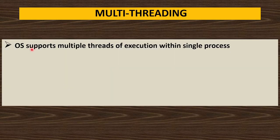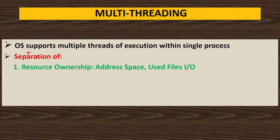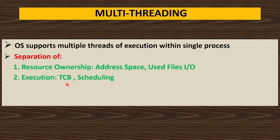In multi-threading, the OS supports multiple threads of execution within a single process. The process is only one but multiple threads are made of that process. Multi-threading does the separation of resource ownership — address space, used files, IO — and execution, which includes the TCB (Thread Control Block) and scheduling. So resource ownership and execution are separated in multi-threading.